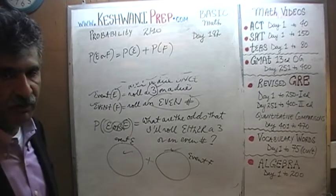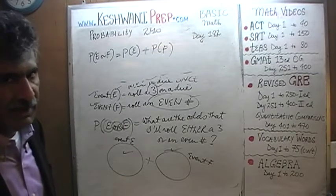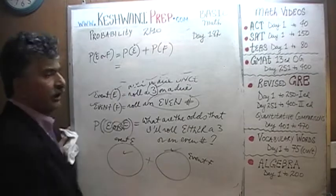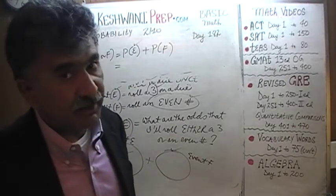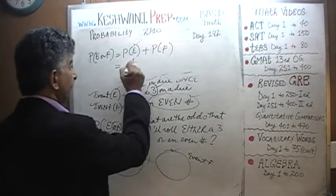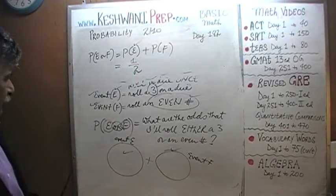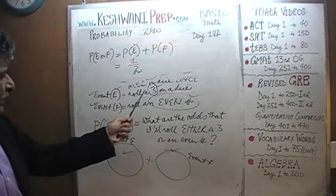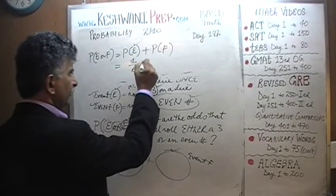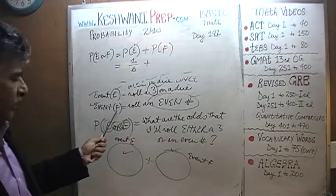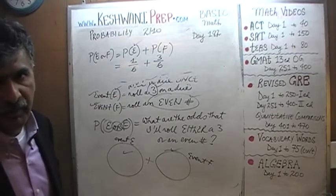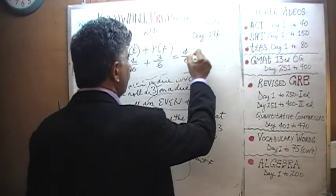Let's apply that to the dice example. Event E was rolling a 3, so odds of rolling a 3 is 1 out of 6. Event F was rolling an even number — odds of rolling an even number is 3 out of 6 because there are three even numbers on a die. So the total odds are 4 out of 6, or two thirds — almost a 67% chance.